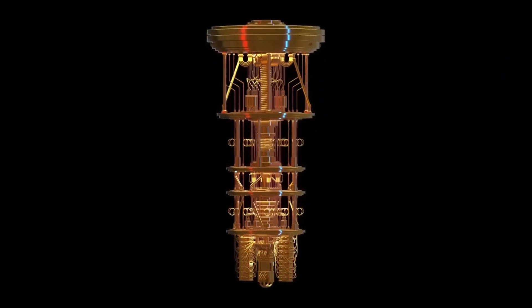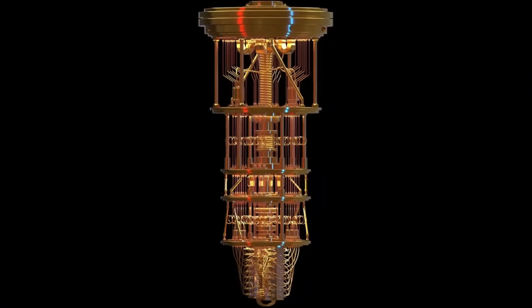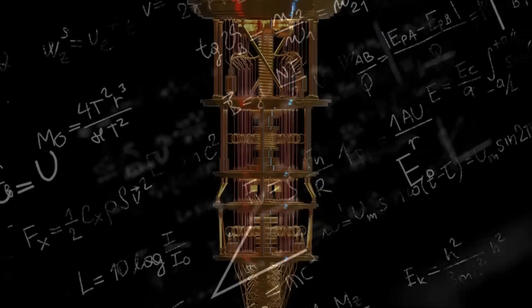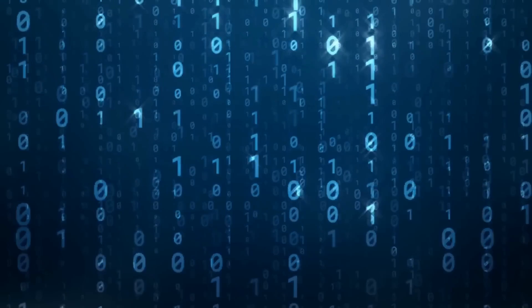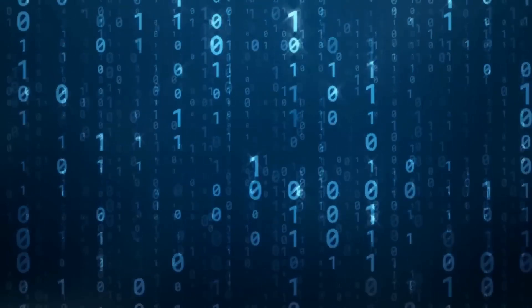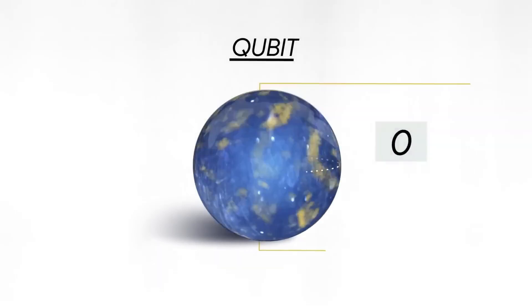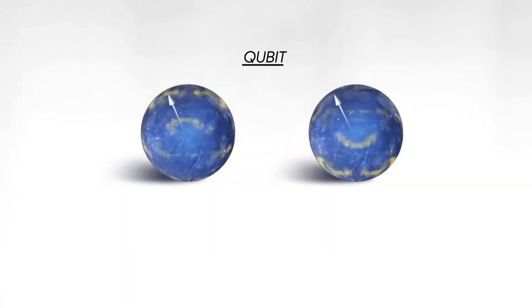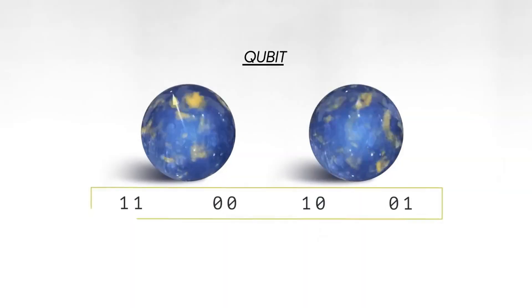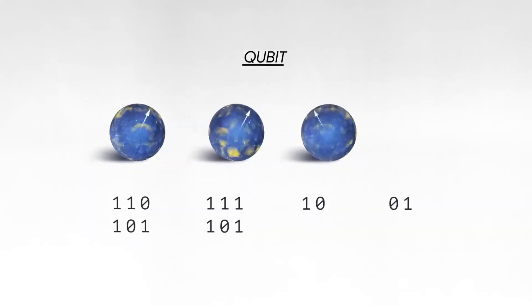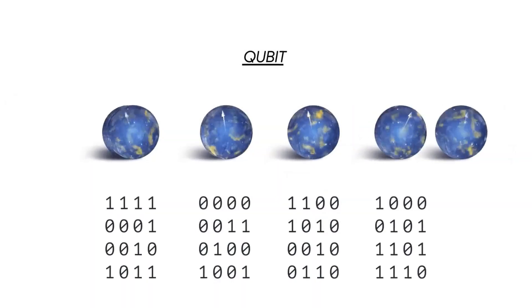Enter Google's Sycamore Quantum Processor, a revolutionary new tool that could change everything we know about physics. Unlike classical computers, which use binary code, zeros and ones, quantum computers leverage qubits, units of data that can exist in multiple states at once. This unique property allows quantum computers to perform calculations far beyond the capability of traditional machines.